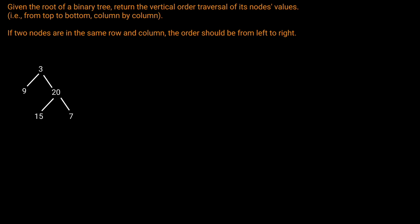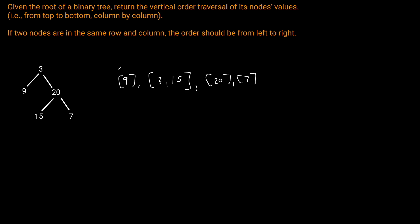Given this binary tree, the answer we want to return is: the first column is going to be 9, the second column is going to be 3 and 15, the next column is going to be 20, and then we have one more column with 7. We want to return all the values in each of the columns.